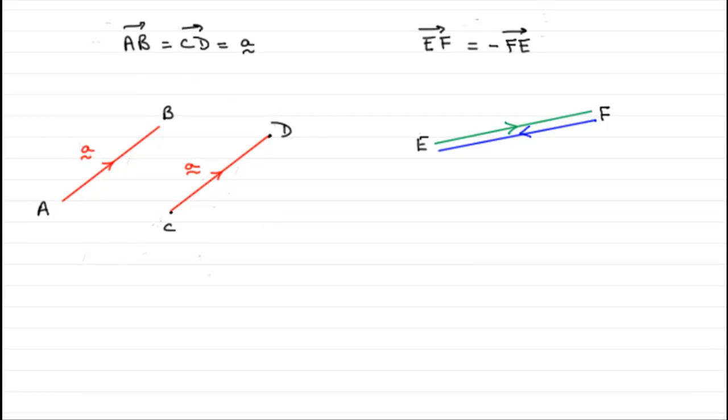So in summary, suppose I had a parallelogram OACB. And the side OA was the vector a, and similarly, going from O to B was the vector b.